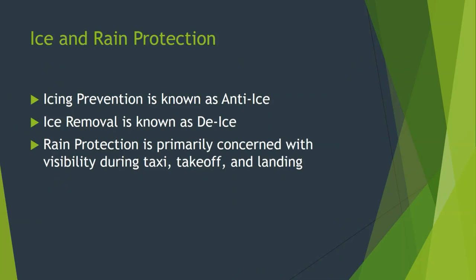Ice and rain protection can take a couple of forms. If we prevent ice from building up in the first place, it's known as anti-ice. Ice removal is known as de-ice. Rain protection is primarily concerned with visibility during takeoff, taxi, and landing. Once the airplane is up and flying, the crew is likely flying under instrument flight rules anyway — transport aircraft are rarely operated under VFR. They're almost always under IFR.